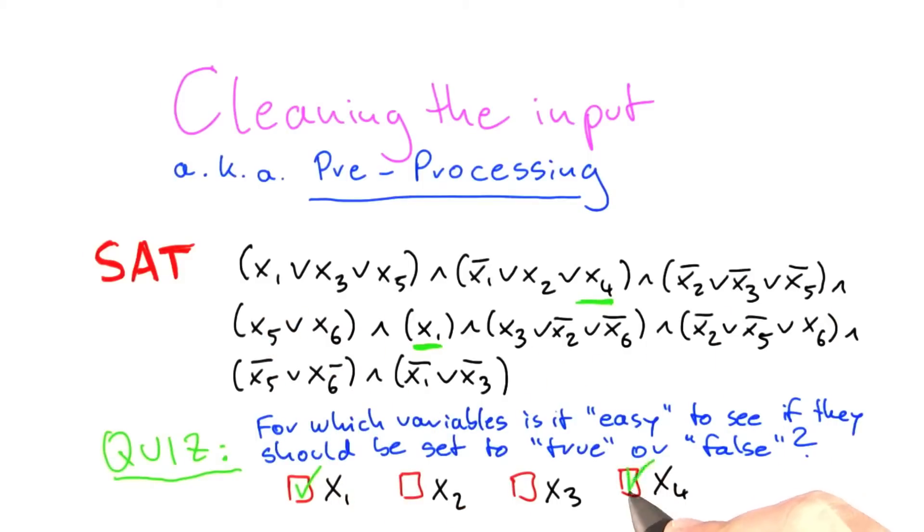The thing that makes SAT hard is when variables appear in different forms, right? So it appears here as x1, and here it appears as not x1. So if we set x1 to true, this clause becomes satisfied, but we get one less variable to satisfy the clause over here. And vice versa, if we set x1 to false, then this clause becomes satisfied, but we get one less variable over here because x1 is now set to false, so we have to either set x3 to true or x5 to true.